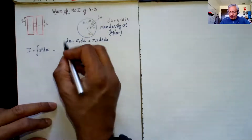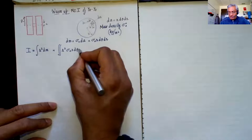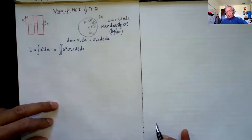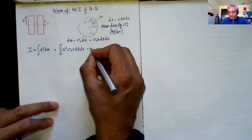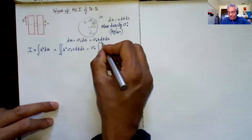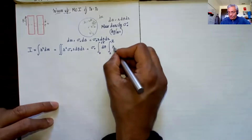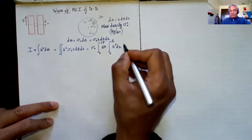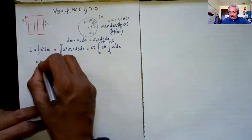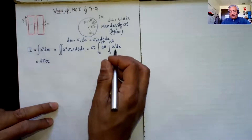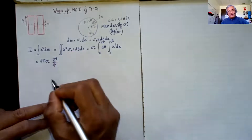That gives us the double integral of r² times sigma-naught times r dθ dr. The angle θ goes from 0 to 2π, and we can separate that out. The integral from 0 to 2π of dθ is just 2π. So we get 2π sigma-naught, and integrating r³ dr from 0 to capital R gives R⁴ over 4.